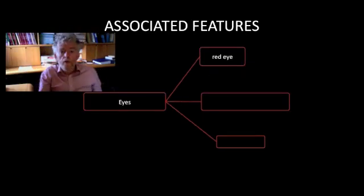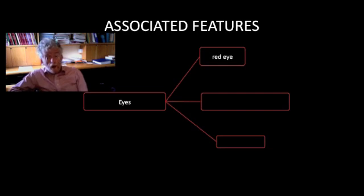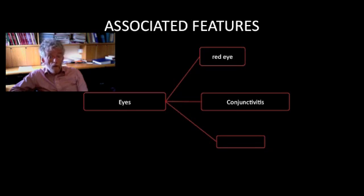Eye disease can be an important clue to the origin of rheumatic disease, and so inquiries should be made with regard to pain or redness in the eye, the presence in the past of conjunctivitis, and the presence of dryness in the eyes.